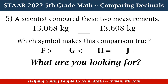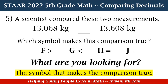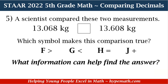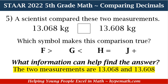The first question we are going to ask ourselves is: what are we looking for? That's going to determine everything else concerning this problem. We are looking for the symbol that makes the comparison true. Next, what information can help us find the answer? We need to know what the two measurements are — they are 13 and 68 thousandths, and 13 and 608 thousandths.